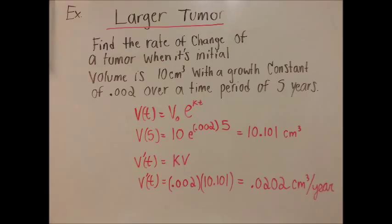In this example, we're going to use a larger tumor to determine its rate of change each year over a period of five years. We're going to use a tumor when its initial volume is 10 cm cubed with a growth constant of 0.002 over a time period of five years. First, we use the equation V(t) equals V naught times e to the kt to find V.